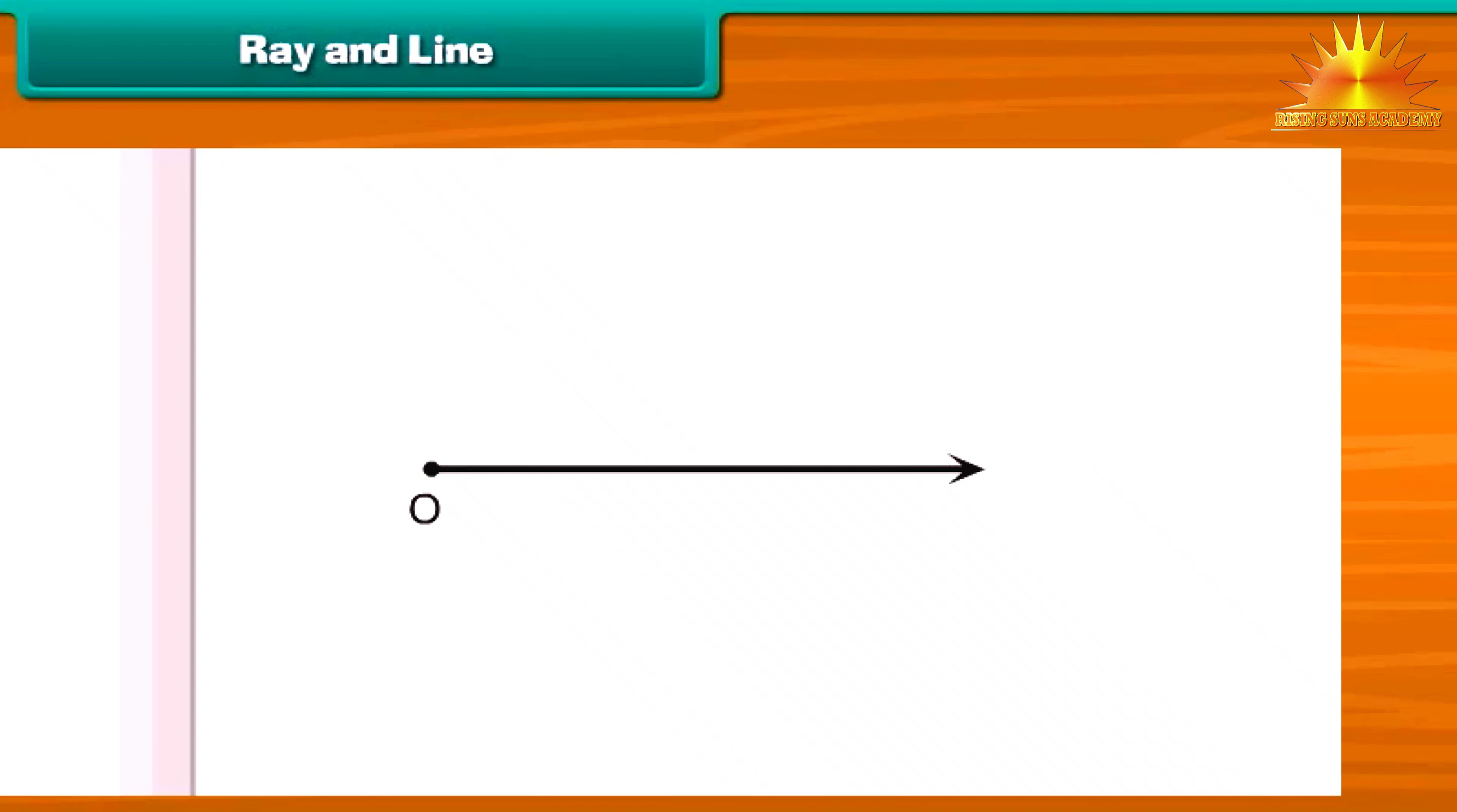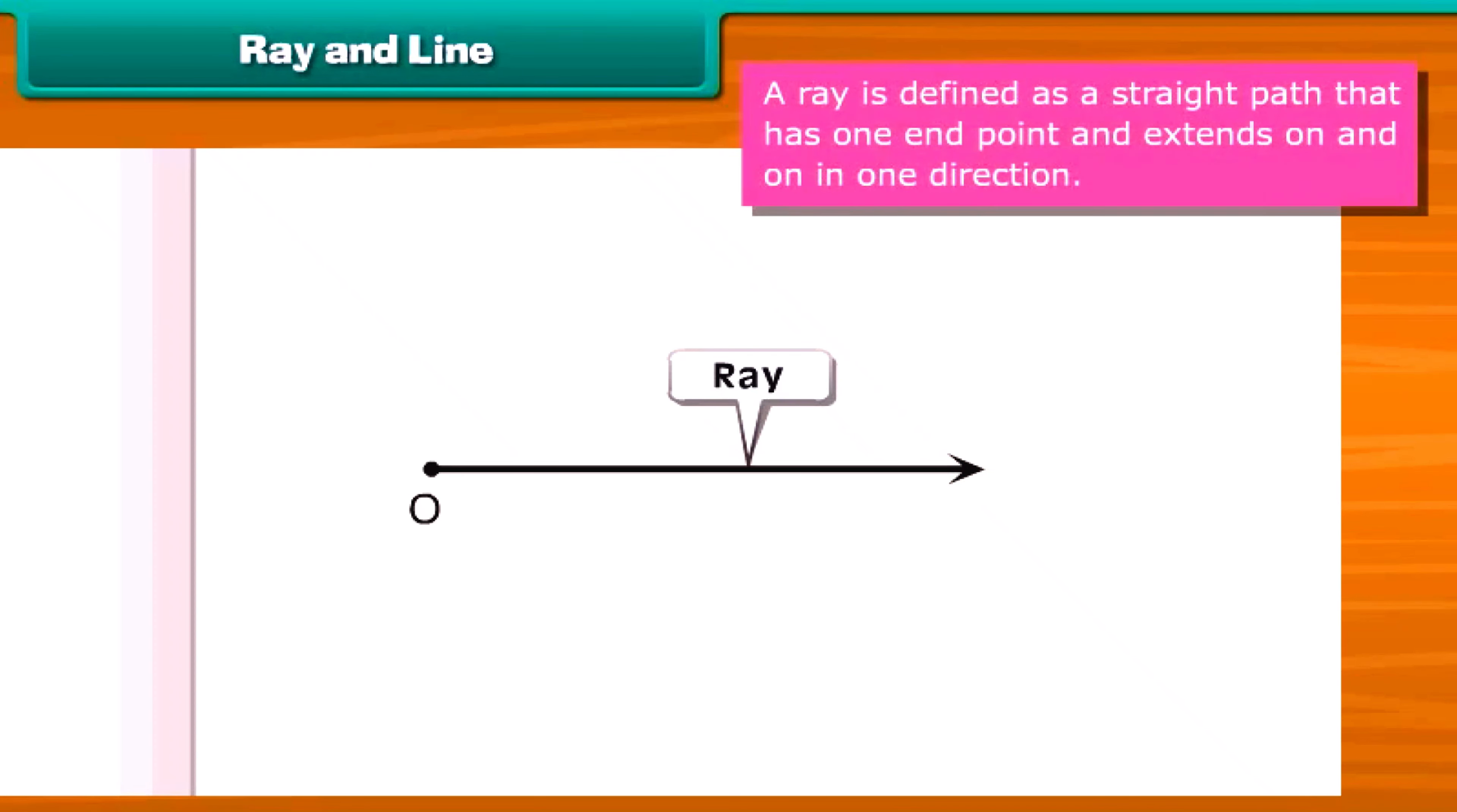What will you call this? It has one end point. On its other end there is an arrowhead. This implies that it can be extended in the direction of the arrowhead. This is called a ray. We define a ray as a straight path that has one end point and extends on and on in one direction.